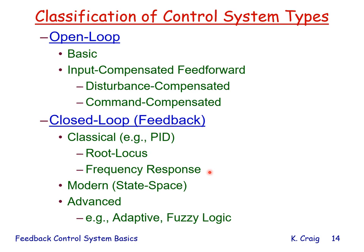The other category for closed-loop control is modern or state-space control, where the differential equations are left in the time domain and all design is done in the time domain. In addition, there are advanced approaches to feedback control such as adaptive and fuzzy logic control. At the end of this presentation, introductory notes on adaptive control and fuzzy logic control have been added as a supplement.